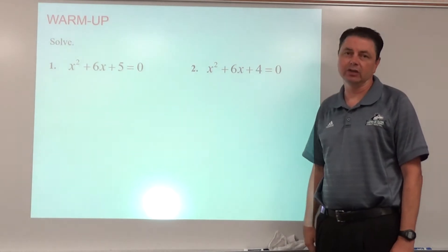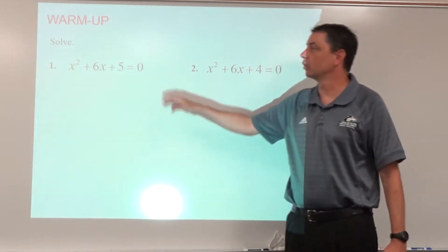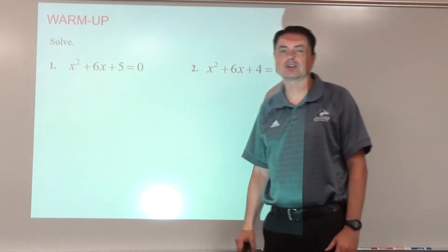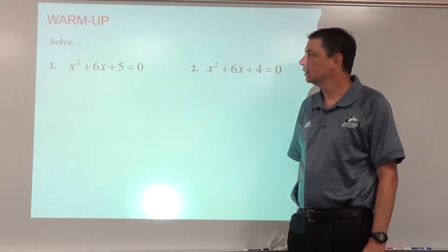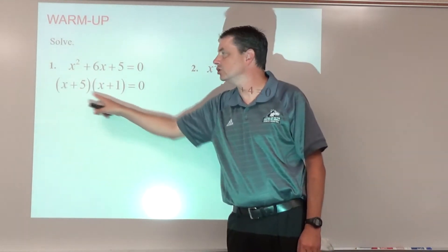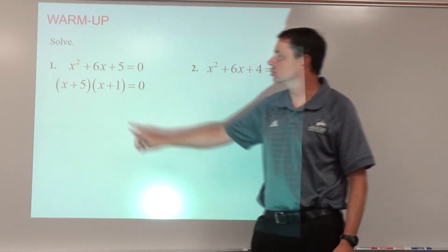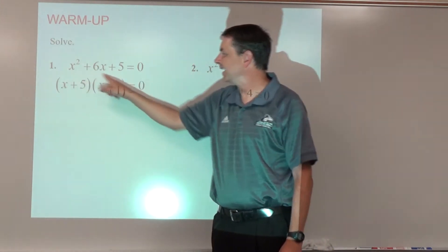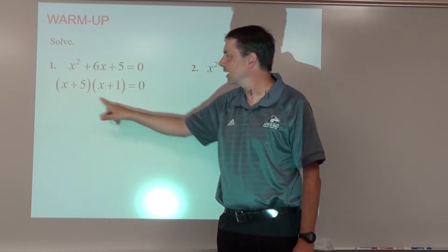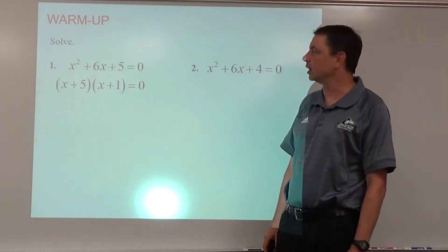All right, let's take a look at number one. A good strategy here would be to solve by factoring — factoring a quadratic trinomial into a pair of binomials. It does factor into (x + 5) and (x + 1). As a check: x times x is x², x times 1 is 1x, 5 times x is 5x, and those added together make the 6x, and 5 times 1 makes the positive 5, so the factoring is correct.